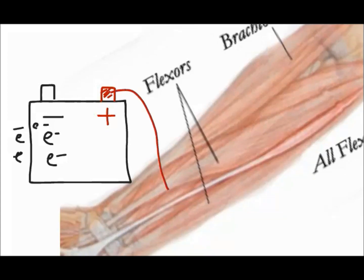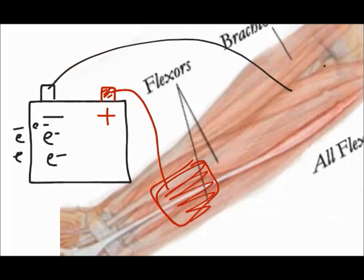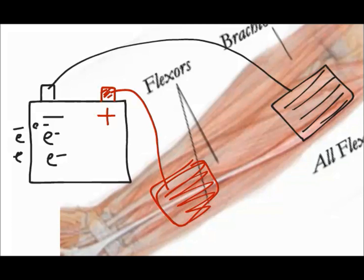If we connect this electric current to an electrode on the positive side and do the same on the negative side, the electric current will run from the negative to the positive. In doing that, it will produce a depolarization of the nerves in that area, and if the electrodes are placed correctly, you will see some action potential and some movement of those muscles.